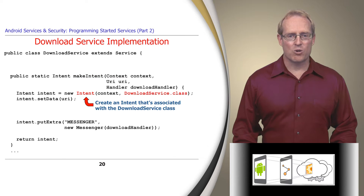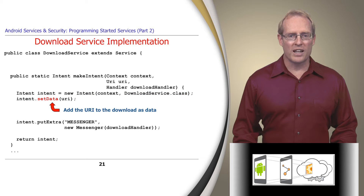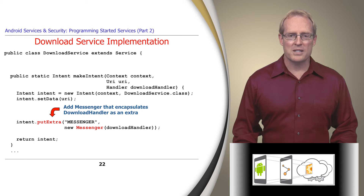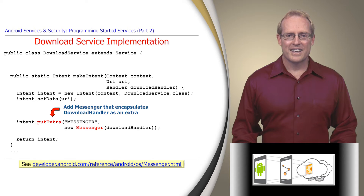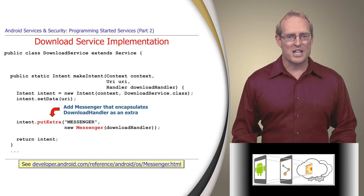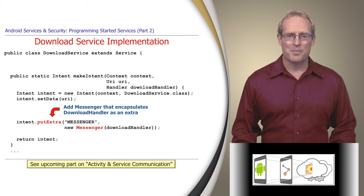The factory method creates an intent associated with the DownloadService class, adds the image URL as data to the intent, and creates an instance of the Messenger interprocess communication mechanism, which encapsulates the download handler and is added as an extra to the intent. The DownloadService later uses this Messenger to pass the path name back to the download activity after it successfully retrieves the image, as discussed in an upcoming video.